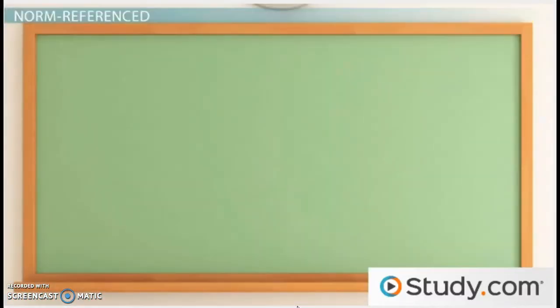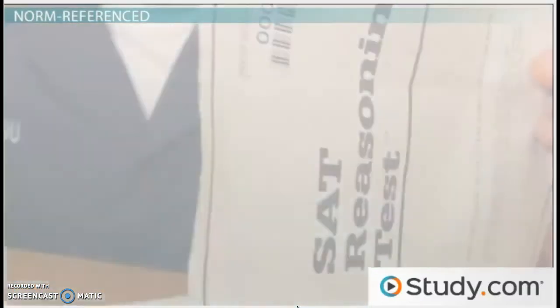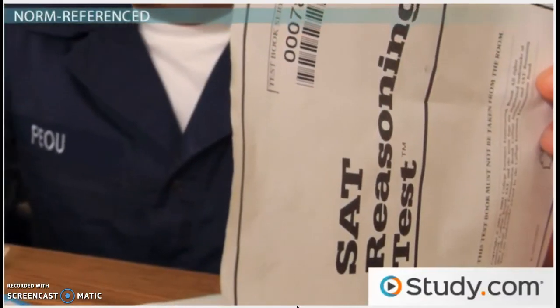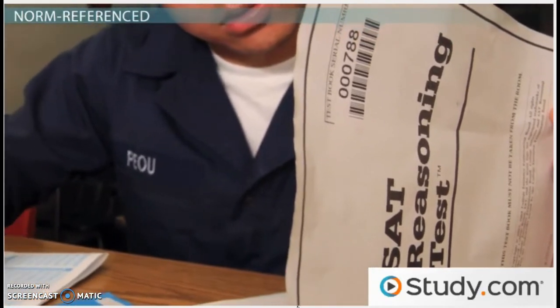So if Rikki decides to make her test norm referenced, she would compare students to what is normal for that age, grade, or class. Examples of norm reference tests include the SAT, IQ tests, and tests that are graded on a curve.